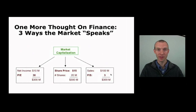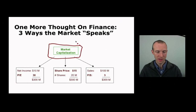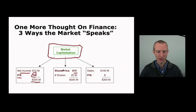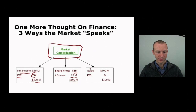There are three different ways to think about the overall market cap — the overall valuation of the company. First, you can think about it in terms of net income and the typical price-to-earnings ratio in that industry. So if you have a net income of $10 million and a P/E ratio of 30, then the market cap is $300 million. Similarly, we can calculate this from the share price: if we have a share price of $15 and there are 20 million shares outstanding, then $15 times 20 million gives a $300 million valuation. The third way is from sales: $100 million in sales with a P/S ratio of 3 gives a $300 million valuation to the company.